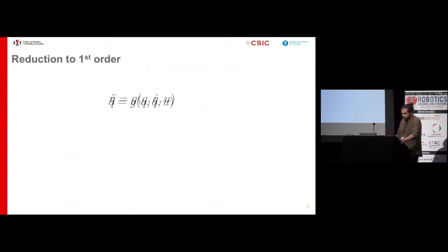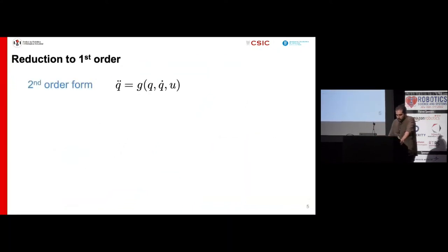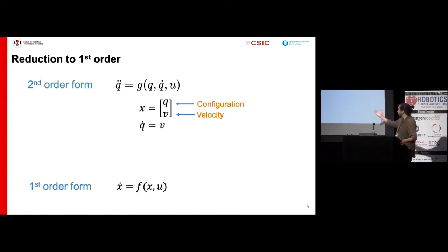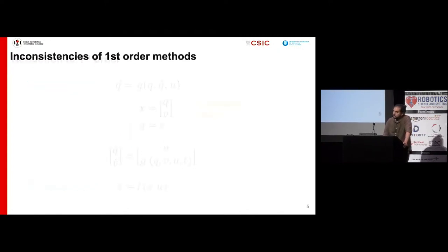Usually, dynamics are described by a second-order differential equation, but usual collocation methods are designed for first-order systems. So, to use these methods, in robotics we typically reduce our problem to this form by defining the state vector x as q, v and adding the constraint q dot equal to v. This results in a first-order system, which already has the required form. This reduction, which in the continuous domain is perfectly valid, leads to inconsistencies when the problem is discretized.